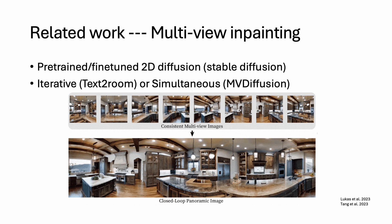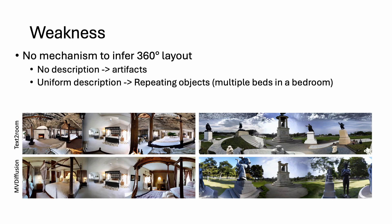Different works have been proposed to solve the panorama generation problem. One important type of method leverages 2D diffusion models to generate multiple perspective views of the panorama. However, these methods lack mechanisms to infer the 360-degree layout. If no description is provided as the input prompt, they are likely to generate artifacted outputs. If a uniform description is provided, they are likely to generate redundant objects, such as multiple beds in a bedroom, which is non-ideal.